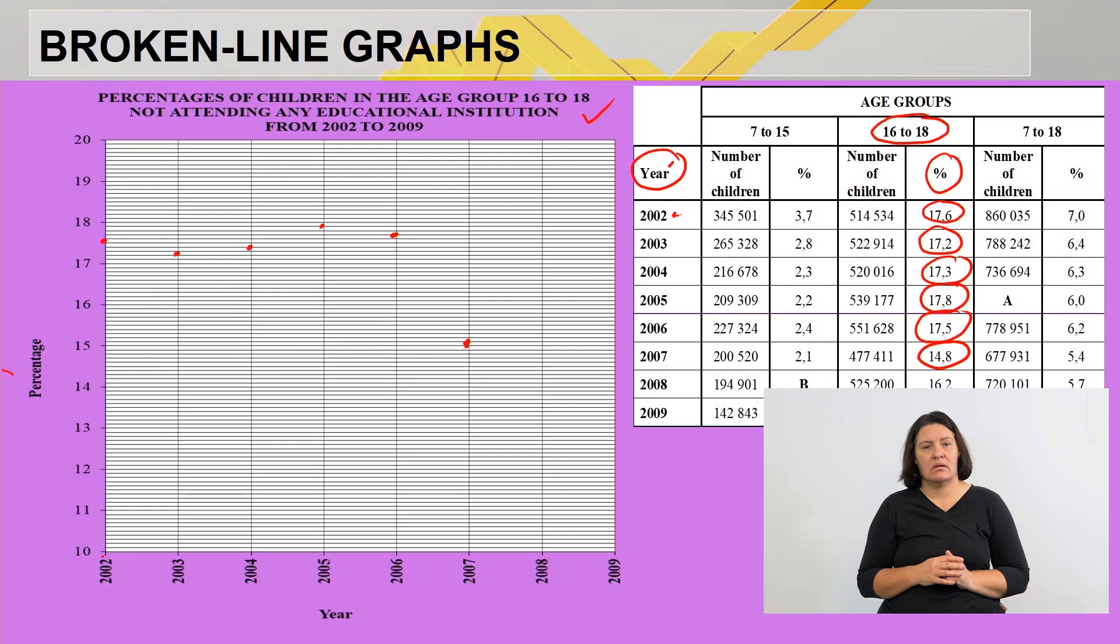Then 2008 it was 16.2. So there is 16, we agree, 16.2 will be here. And then lastly, 2009 it was 16.7. So it's 16 point, I'm gonna go here and go three down: 16.7. So I've plotted all the points.